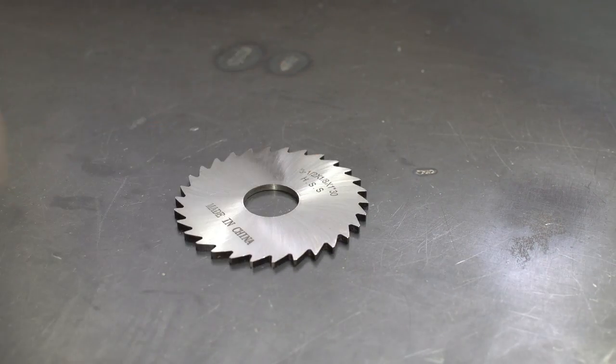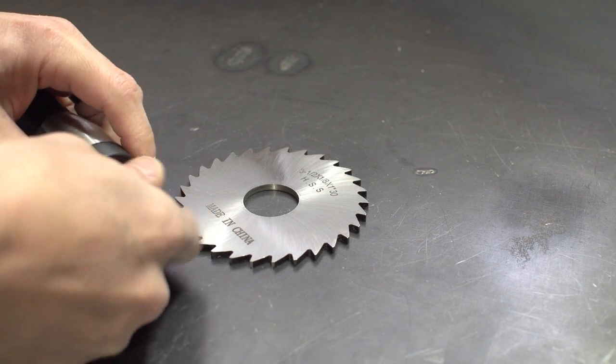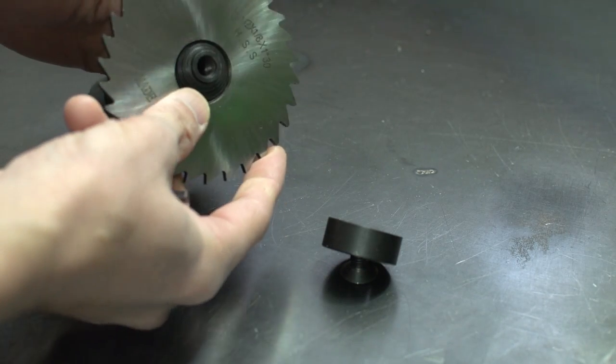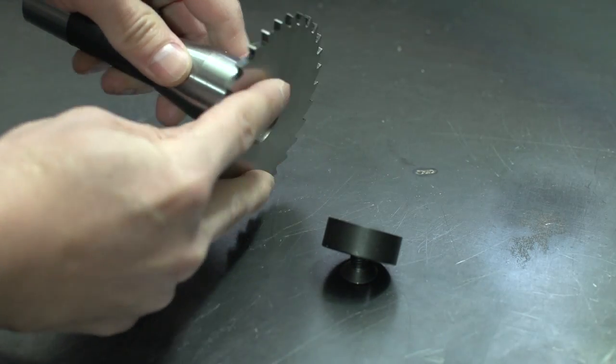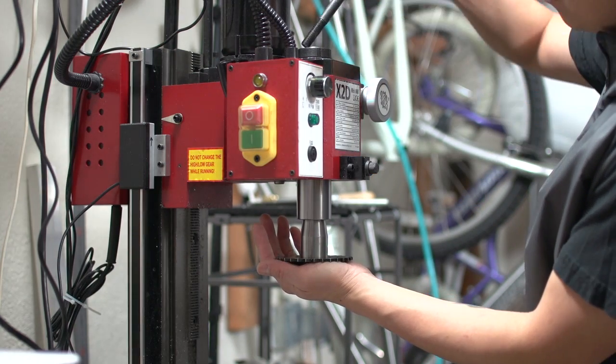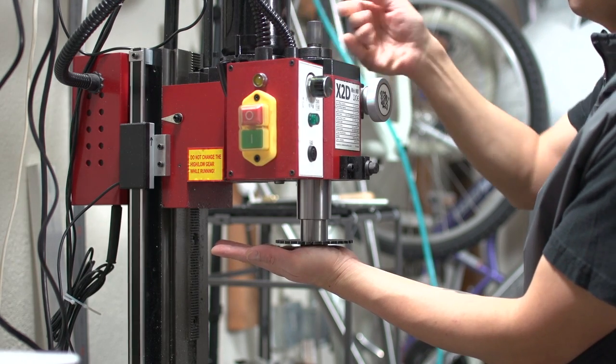Okay this is a 3.5 by 1/8th inch thick 30 tooth slitting saw. I picked this up on Amazon for $9.46. So off camera a day earlier, I had already tested this saw and it went very badly. I then decided to show you guys in this video just how badly it went, so that's why part of the binder is already cut.